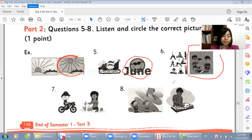Number six. What are they doing? They are making paper planes. The second option. Next. Number seven. What does she like doing? She likes cooking.